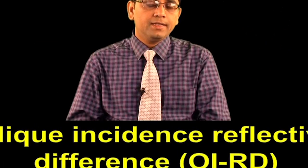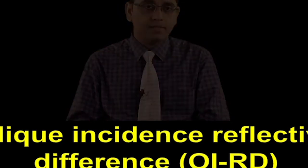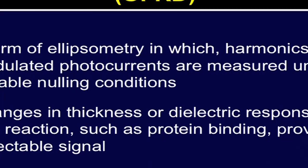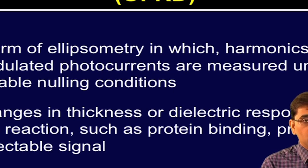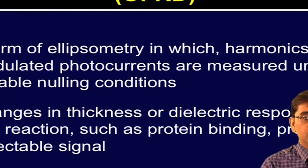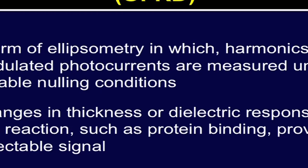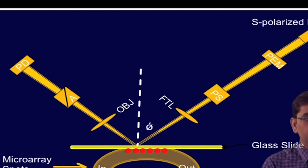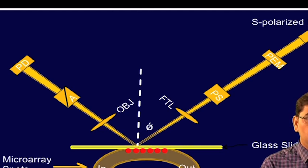Let us talk about oblique incidence reflectivity difference, or OIRD. OIRD is a form of polarization-modulated imaging ellipsometer, in which the harmonics of modulated photocurrents are measured under suitable Nulling conditions. It can be used for label-free high-throughput detection of biomolecular interactions on DNA as well as protein microarrays. In this scanning OIRD microscope, the X scan is performed by moving the sample holding stage and the Y scan is performed by a combination of a rotating mirror and theta lens.